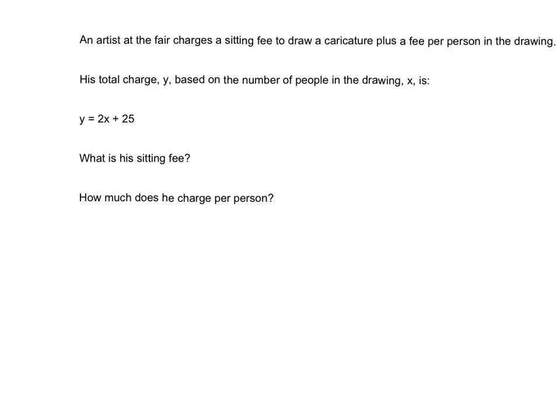That was how to find the rate of change and initial value from a situation. Now we're going to look at an equation. We have an artist at the fair who charges a sitting fee to draw a caricature plus a fee per person in the drawing. His total charge y, based on the number of people x, is y = 2x + 25.